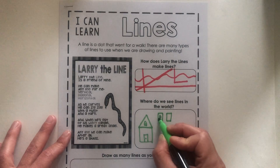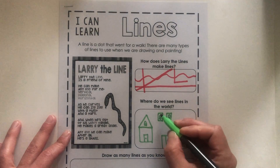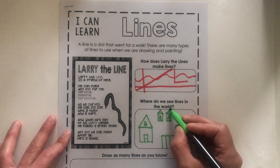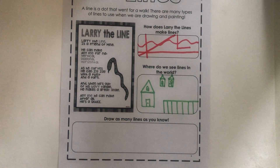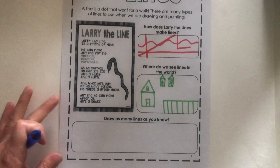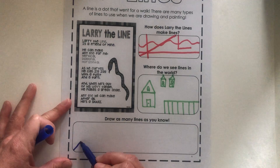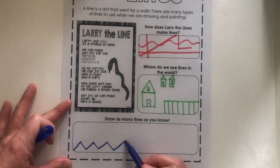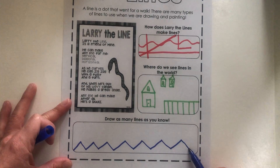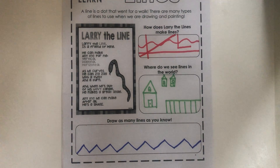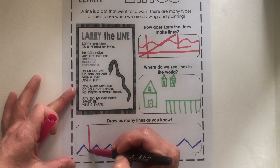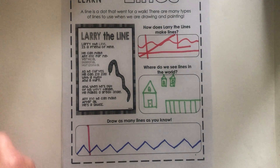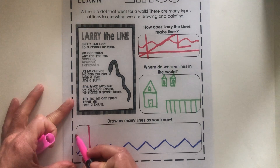You can draw pictures in these boxes or you can write down words. Just look all around you and see where you see lines. Our next box says draw as many lines as you know. You get to have fun with some different lines. I really like the zigzag line. I'm going to draw a vertical line and maybe a wavy line.